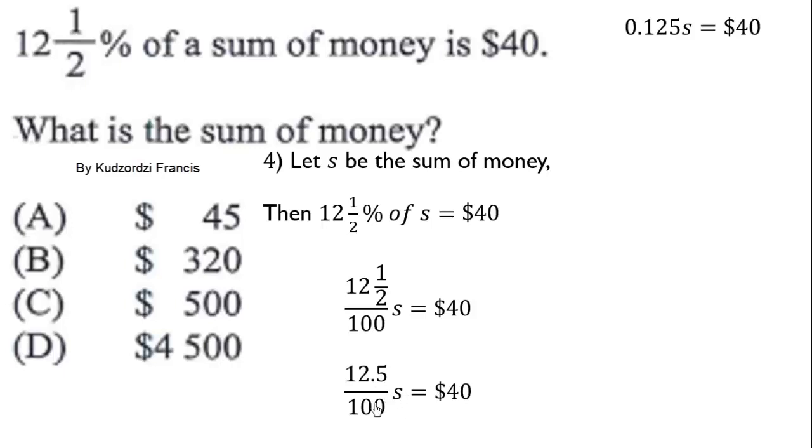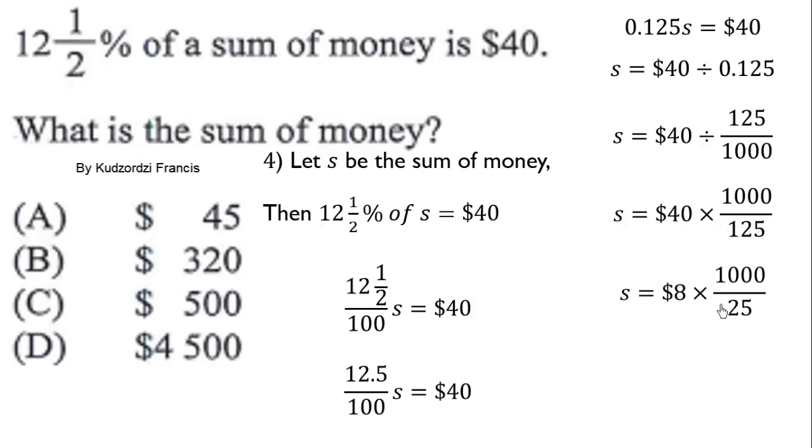Divide both sides by 0.125 to get s equals 40 divided by 0.125. Change this back to fraction: 40 divided by 125/1000. Multiply by the reciprocal: 40 times 1000/125. Divide: 5 goes into 40 eight times and into 125 twenty-five times. 25 goes into 1000 forty times, so 8 times 40 equals 320. The correct answer is B.